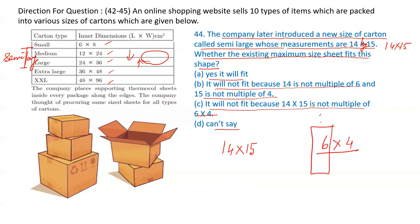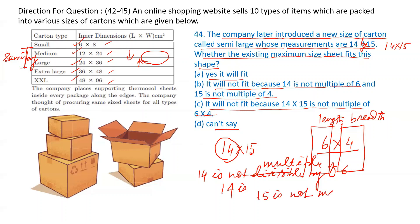No. Why? Because we have already calculated it was 6 by 4. Because 6 was HCF of all lengths, 4 was HCF of all breadths. It is divisible by 6, 6, 6, 6, 6. But if you make it 14, it is not divisible by 6. 15 is not multiple of 4. Length should be multiple of 6, breadth should be multiple of 4. So B is answer: it will not fit because 14 is not multiple of 6 and 15 is not multiple of 4.